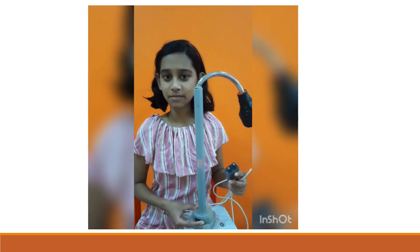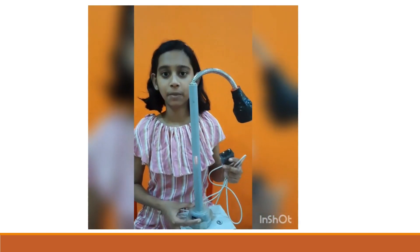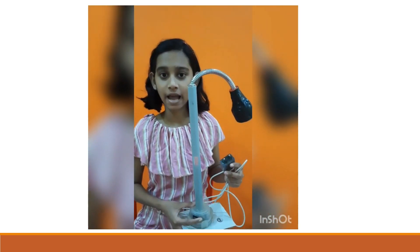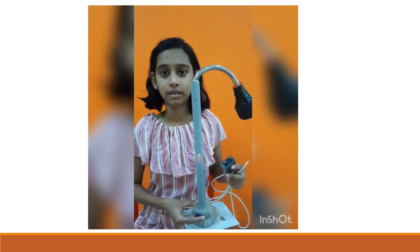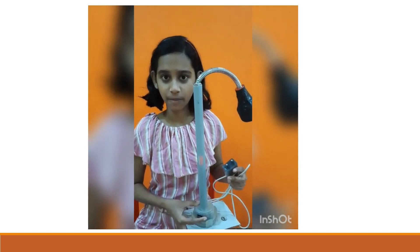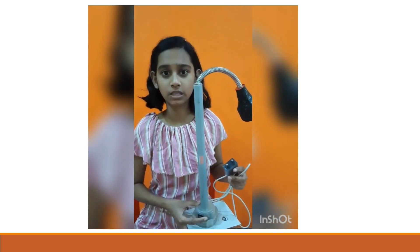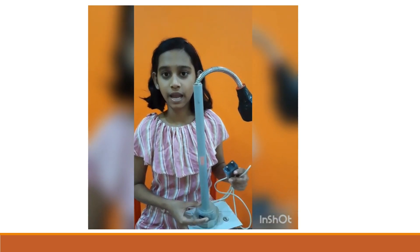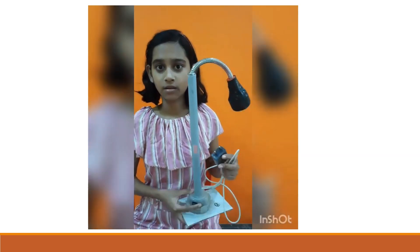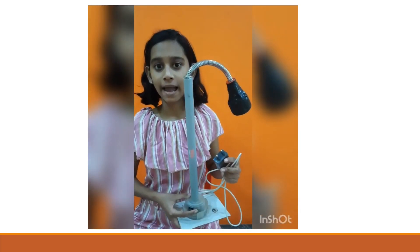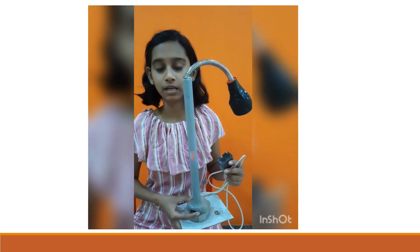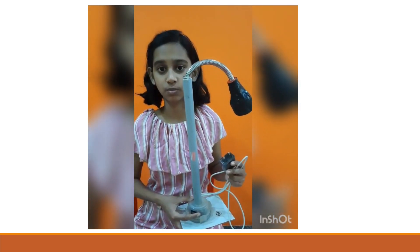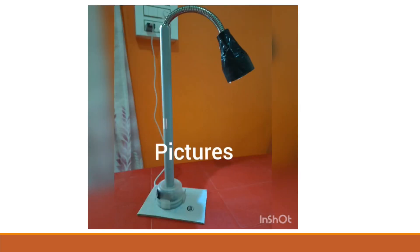This is my electric lamp. The materials that I have used in this lamp are a PVC pipe, a bottle, a battery, a bulb, a switch and a wire. The light in the lamp glows when we put the plug into the switchboard. Thank you.